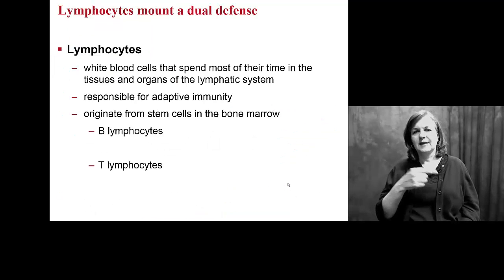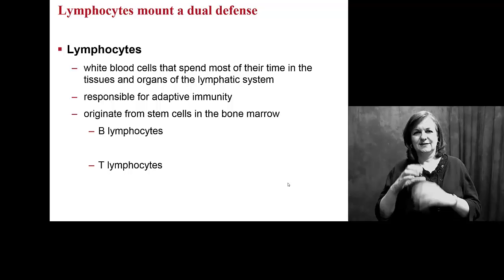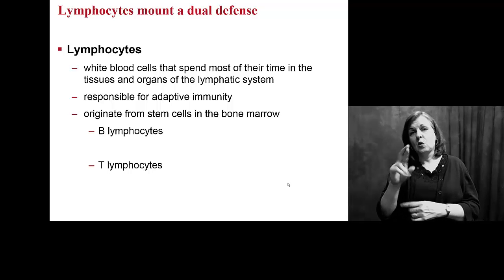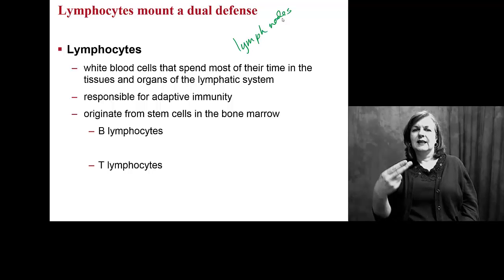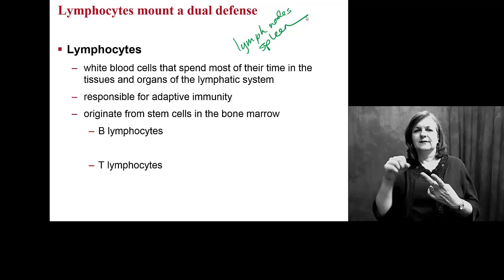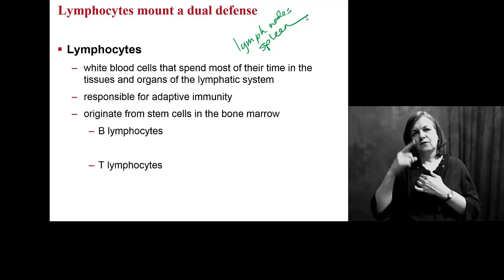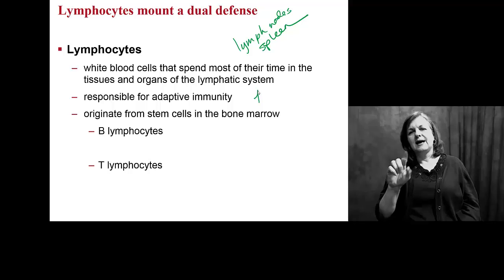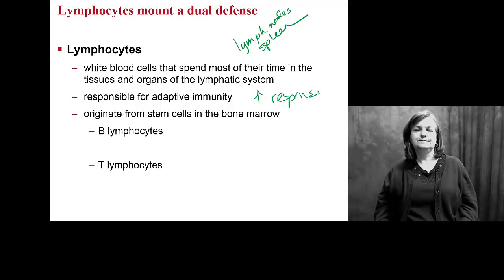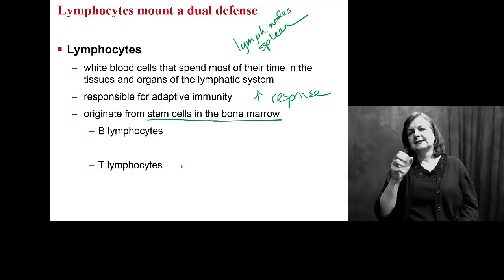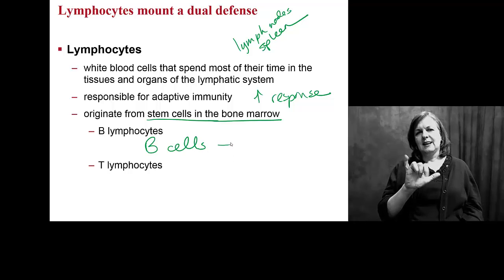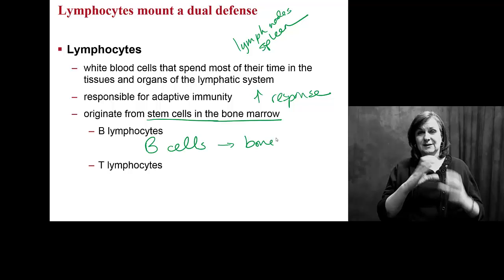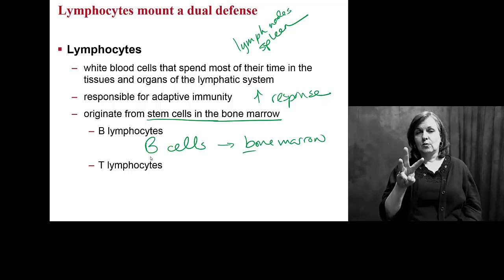When we look at lymphocytes — these are our lymph cells, white blood cells that are in the tissues and organs of the lymph system, primarily in your lymph nodes and your spleen — they are responsible for this adaptive immunity. All of them come from stem cells in your bone marrow. We're going to focus on B lymphocytes, or B cells, and these are made in the bone marrow — B for bone marrow.